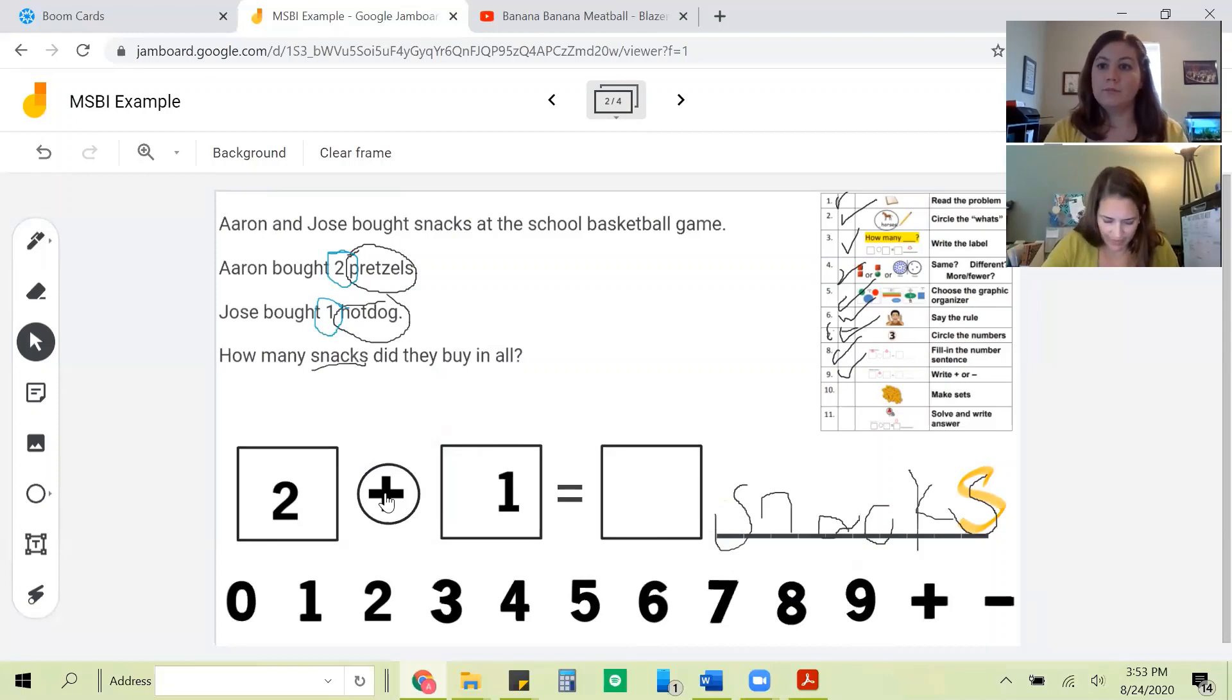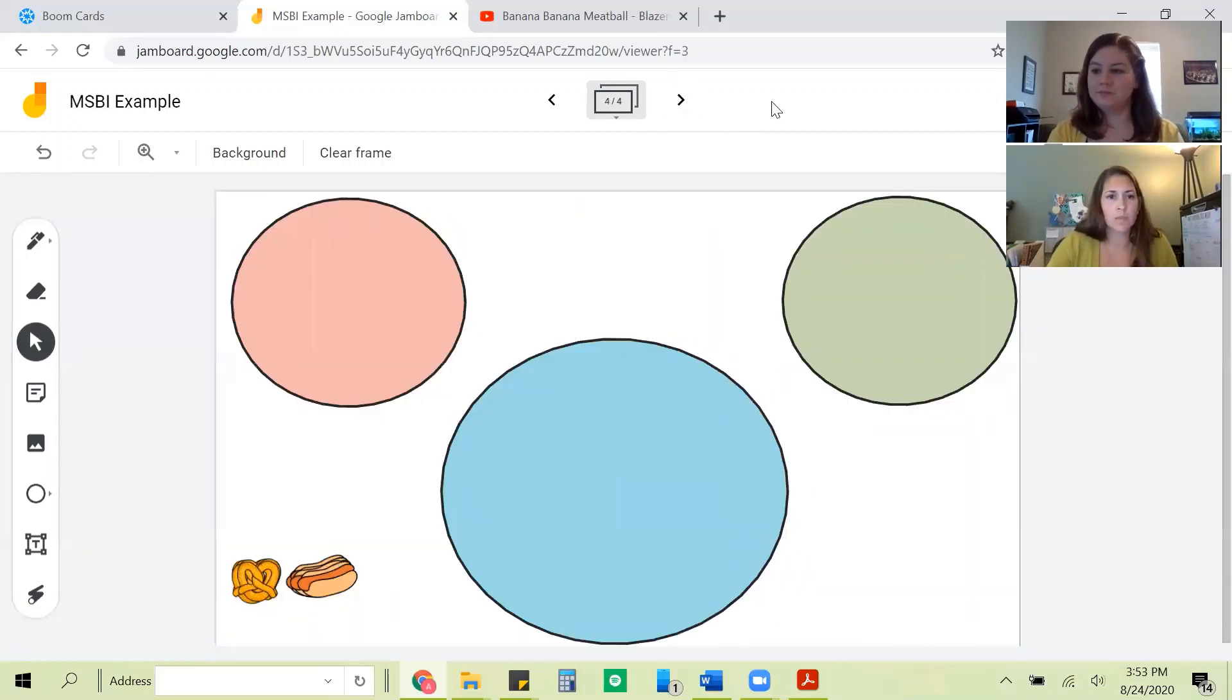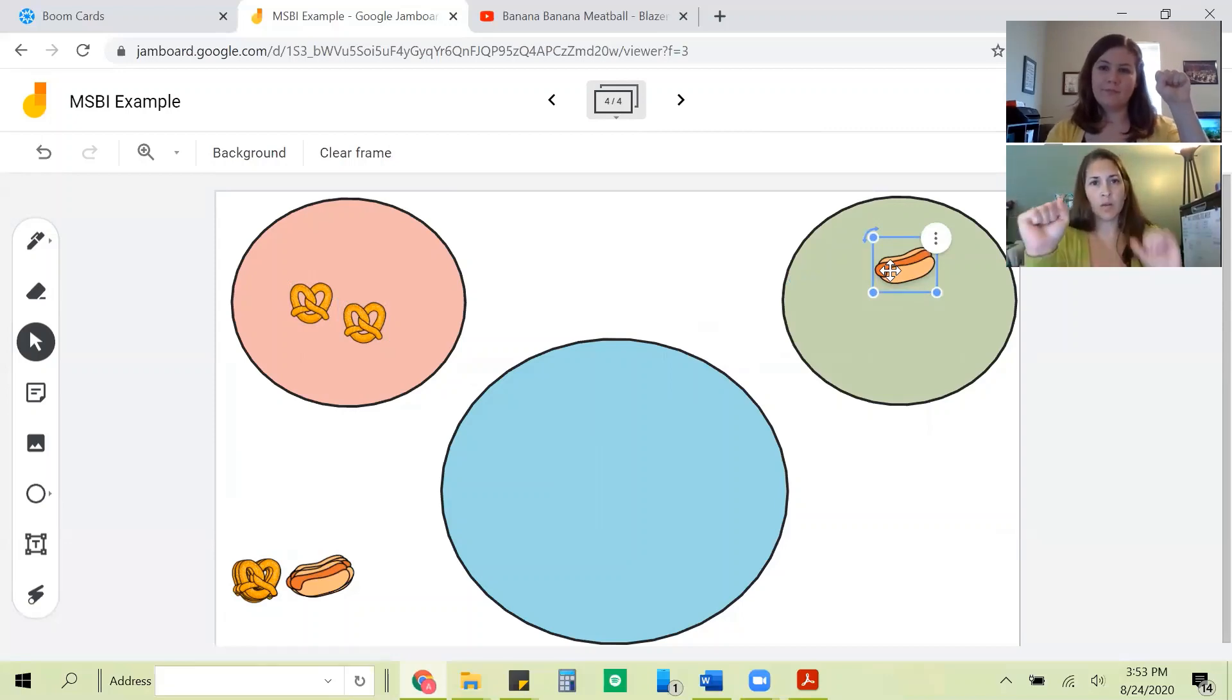Next, we make sets. Nice job. Two pretzels. One hot dog. Great job. Let's say our rule again. Small group, small group, big group. Great. Make a big group.